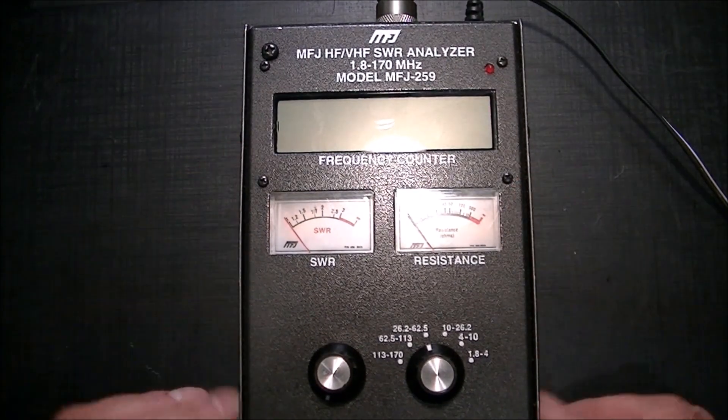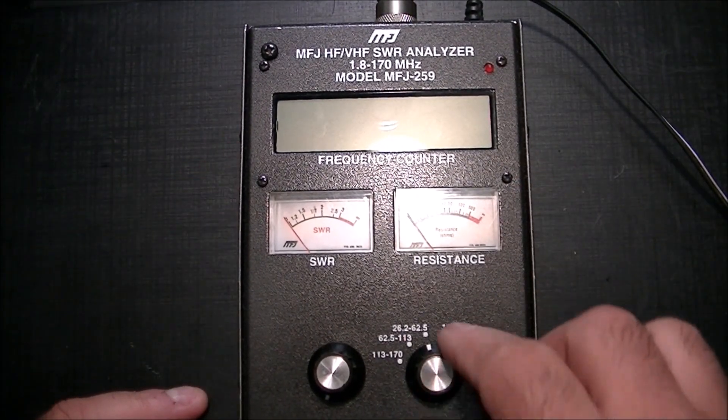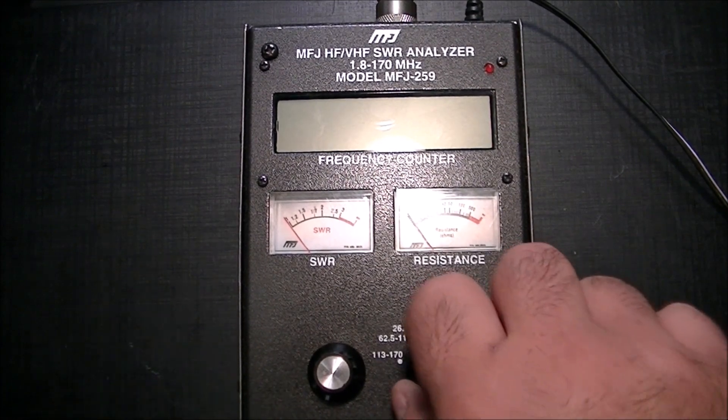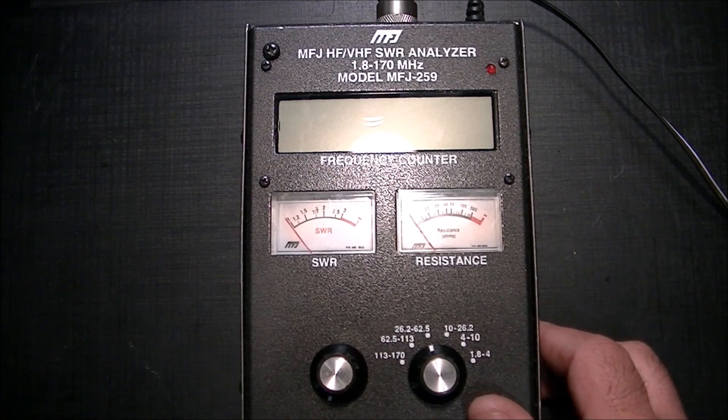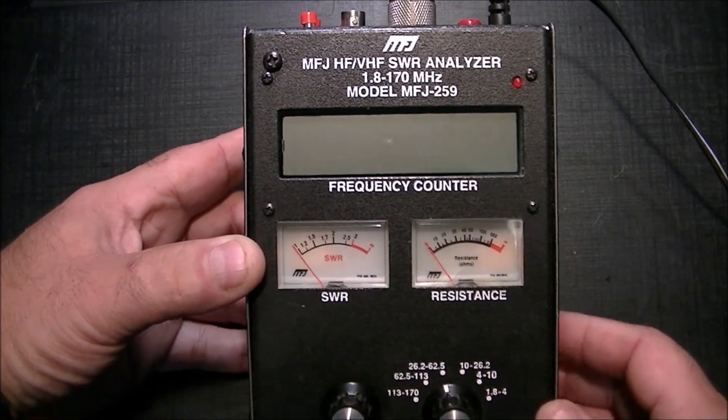Currently I have my Antron 99 running right into the back of the device and I have it selected at 26.2 to 62.5, which is around the band where the Antron 99 is resonant.